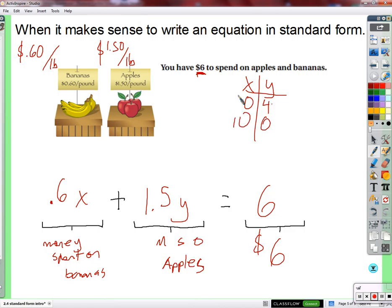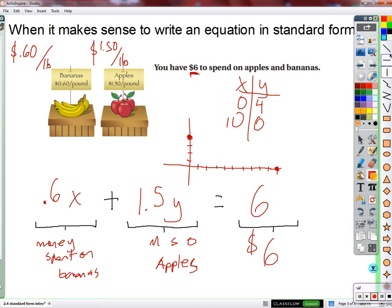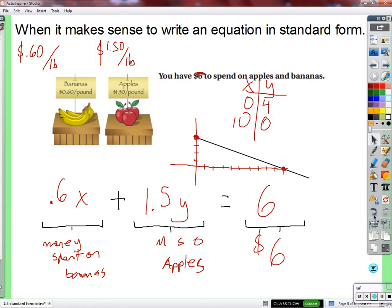So what does this represent? If X is 0 and Y is 4, what does that represent here in this situation? You get 4 pounds of apples and no bananas. So I could exclusively buy apples, 4 pounds of them, and spend all $6. And the other represents 10 pounds of bananas and no apples. So you see that on the graph. This represents spending no money on bananas, spending all of it on the 4 pounds of apples. This represents spending all your money on bananas and no apples. And when we connect those two points, what did I just draw? Infinite number of points. And what do all those points represent?